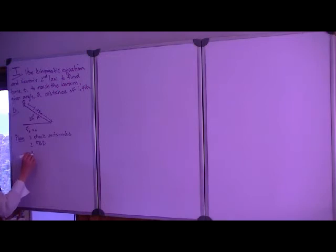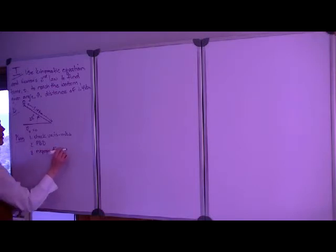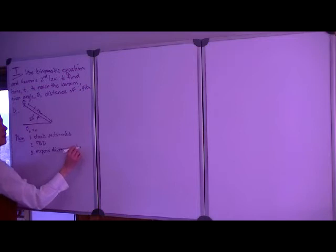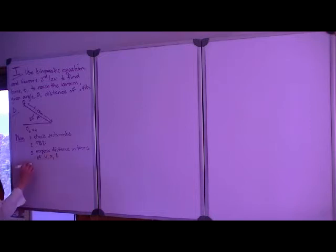Next, we want to write an equation of motion that will express the distance down the hill in terms of other quantities like velocity, acceleration, and time. Since we don't have acceleration, this is where we recall Newton's second law.